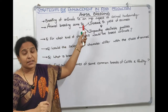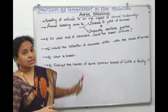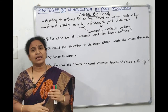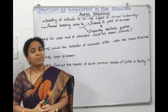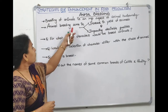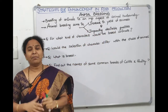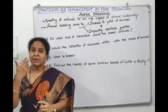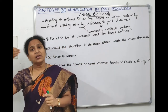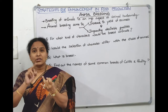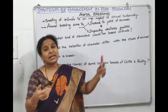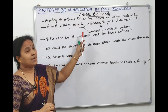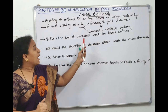Animal breeding has specific aims, as stated in NCERT. Just as a student joining 11th and 12th aims to crack the NEET entrance exam for an MBBS seat, the aim of animal breeding is to increase yield — for example, increasing a cow's milk production from 10 to 20 liters per day — and to improve desirable qualities, such as increasing protein or sugar content in milk. So increasing yield and improving quality are the two main aims of animal breeding.